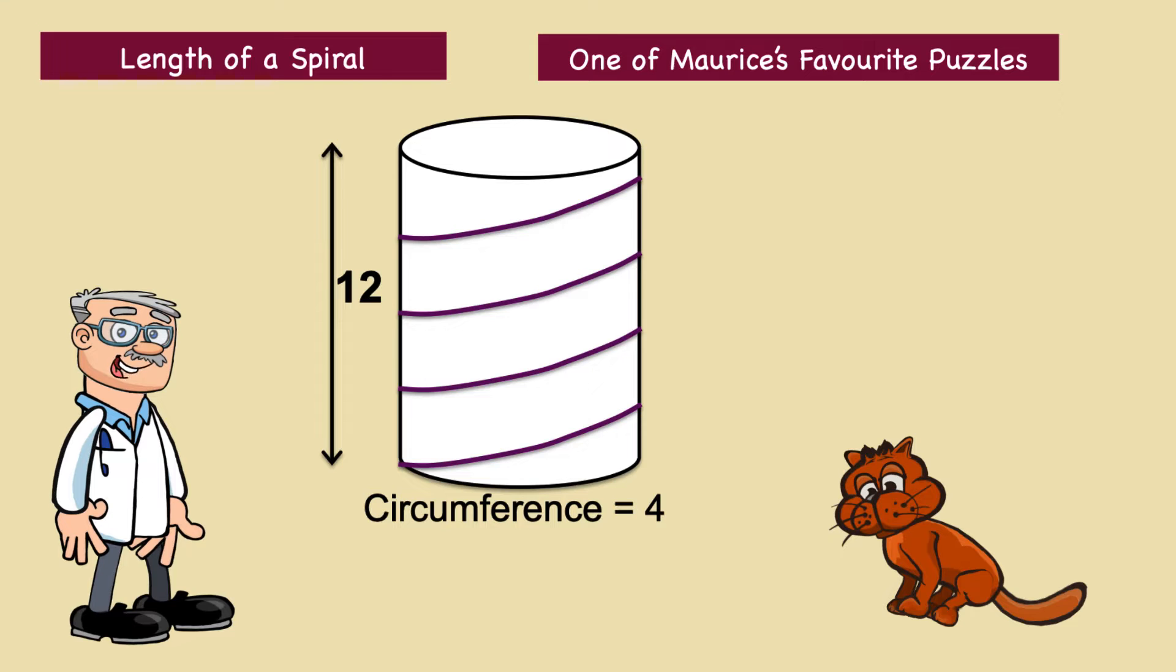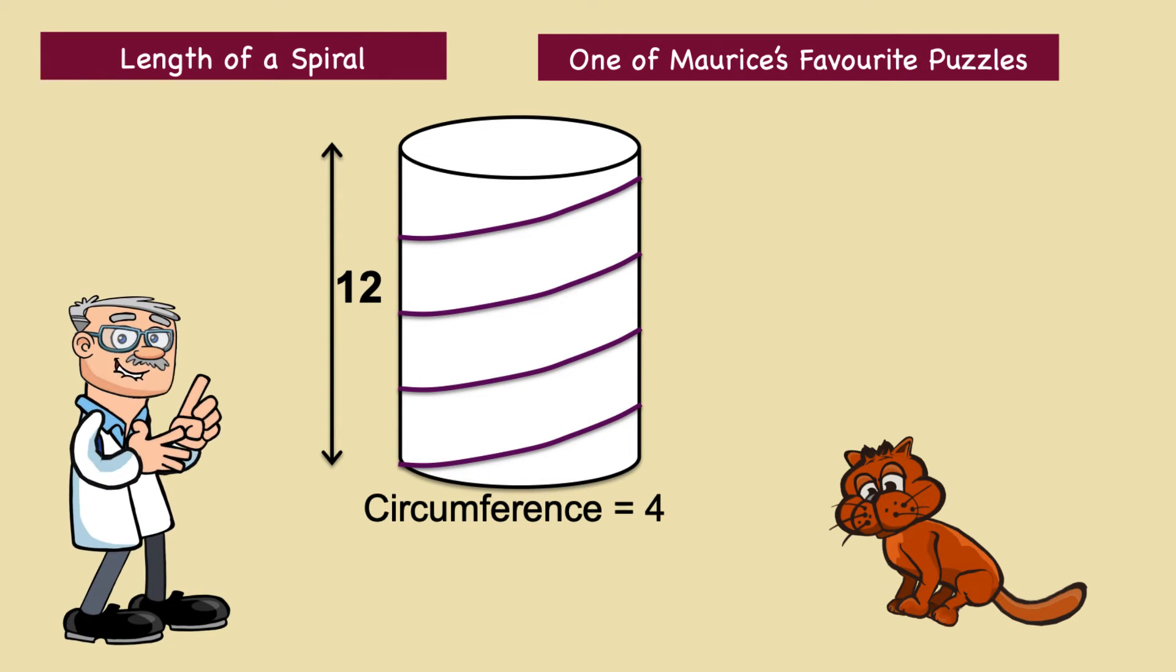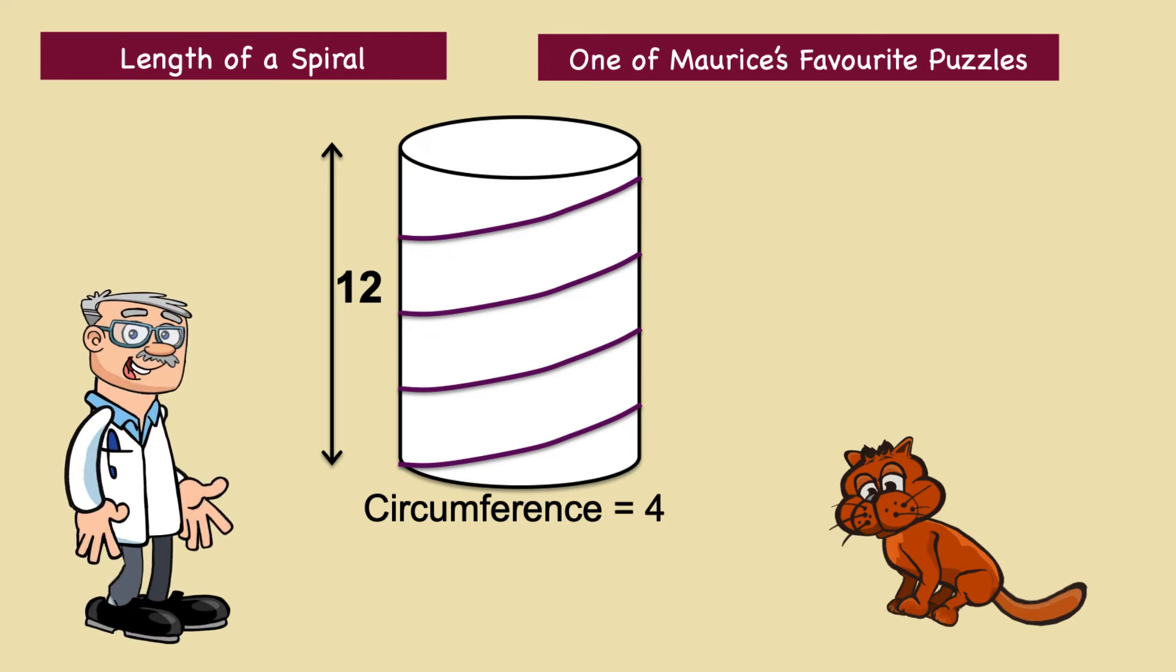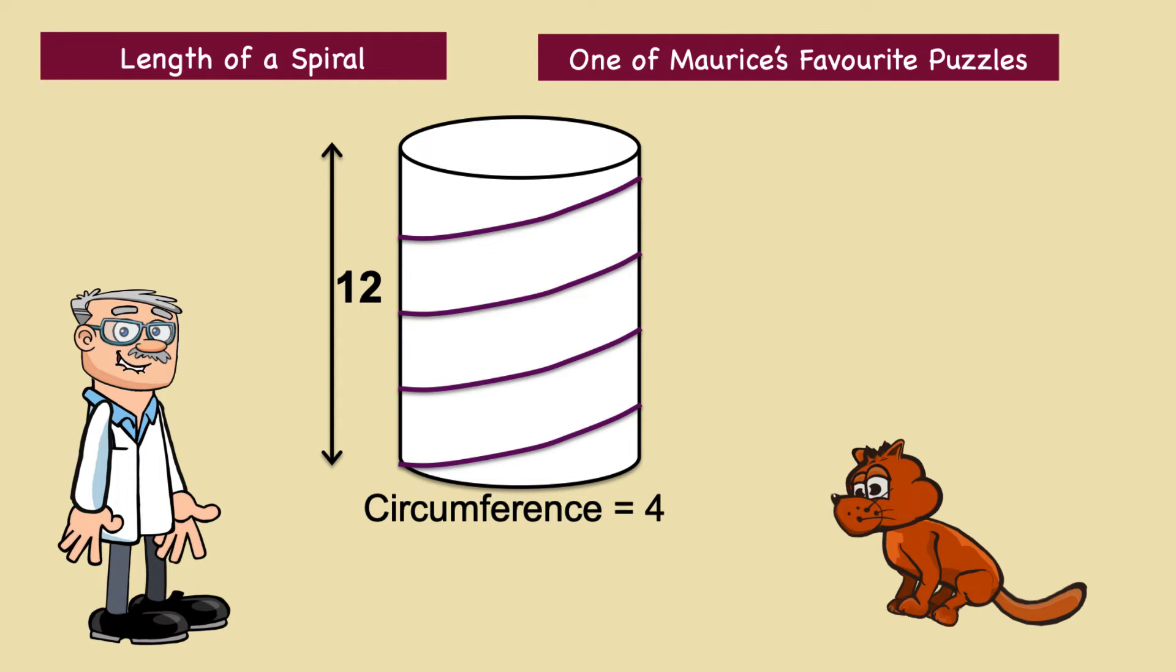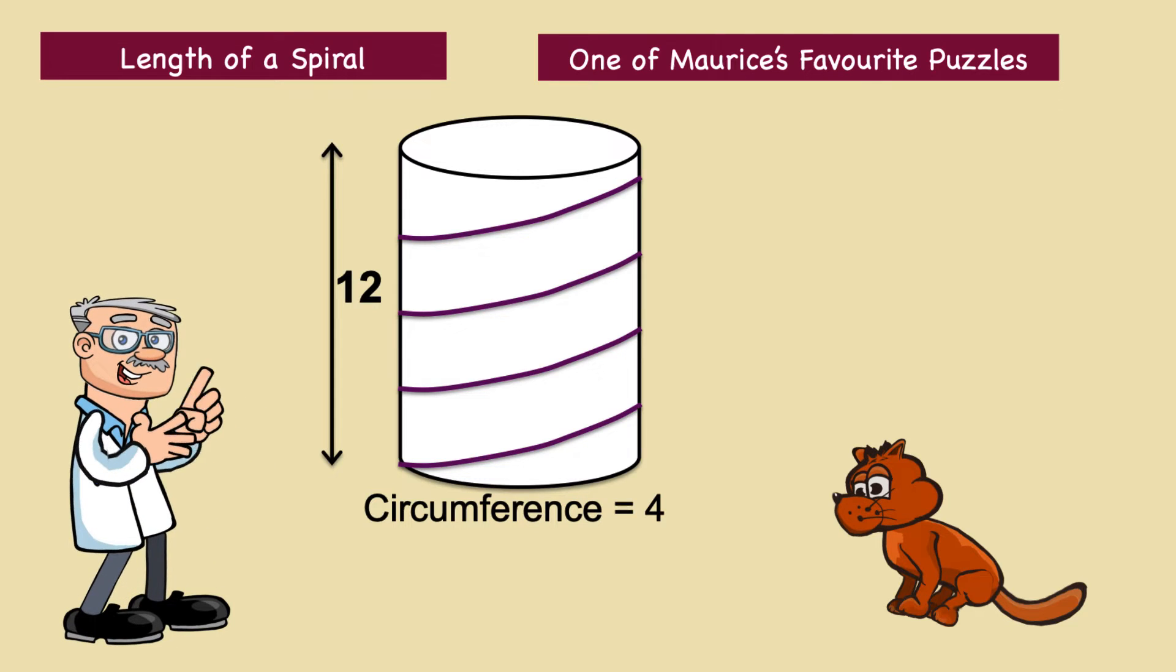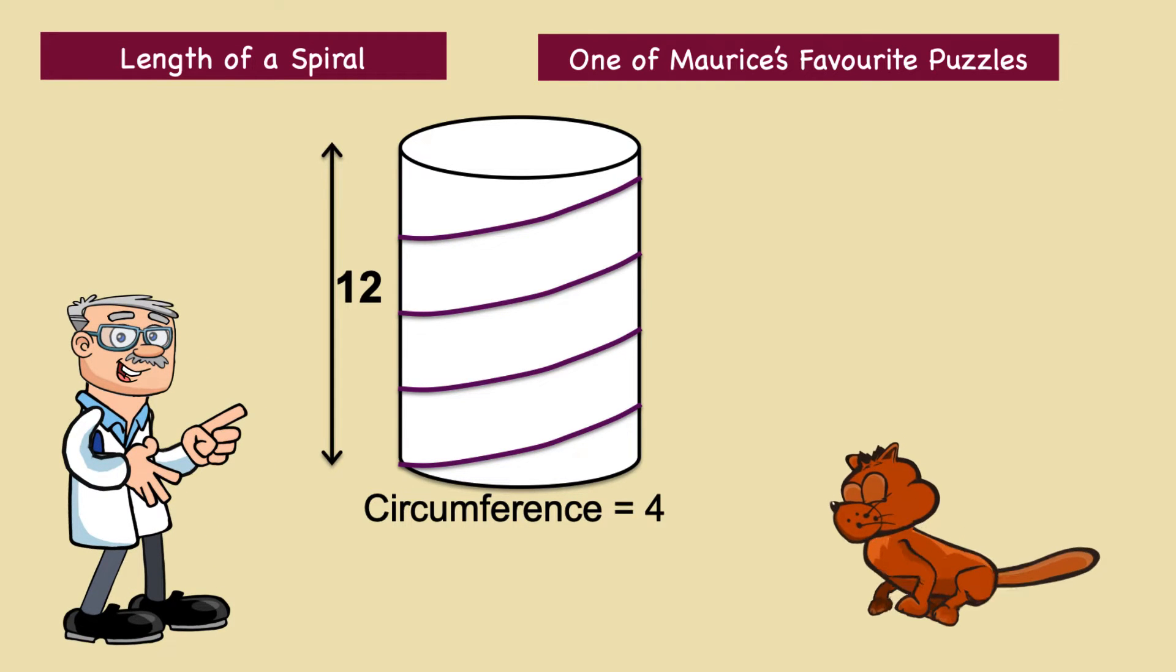Thank you, Maurice. This puzzle is simple to explain but tricky to work out, unless you can see the very simple trick you can do to help you. A tightly wrapped string makes four loops around a cylinder of height 12 and circumference 4. What is the length of the string?